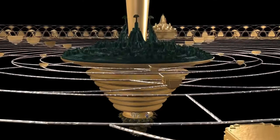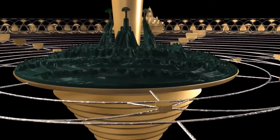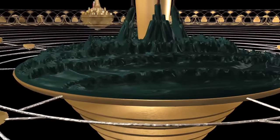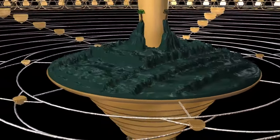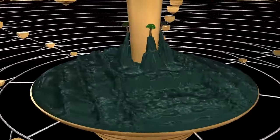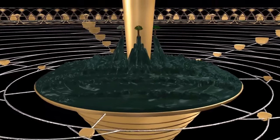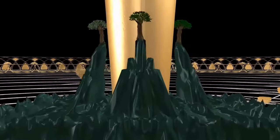Here we can see Jambudweep, the central island of Bhumandala, and Bharat Varsha is situated on the southern side of that. There are eight other Varshas, with Ilavrata Varsha in the centre, various supporting mountains with large trees upon them, described in Srimad Bhagavatam.